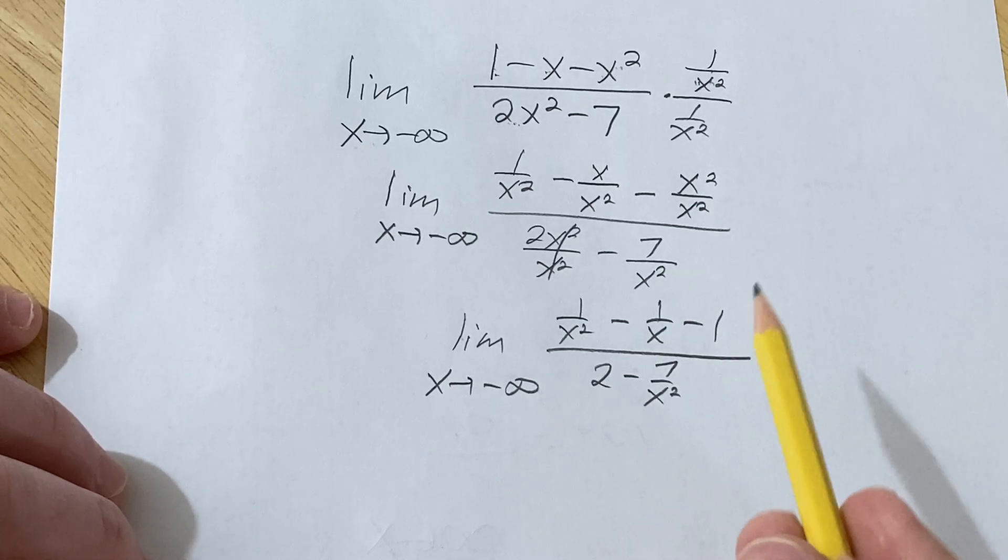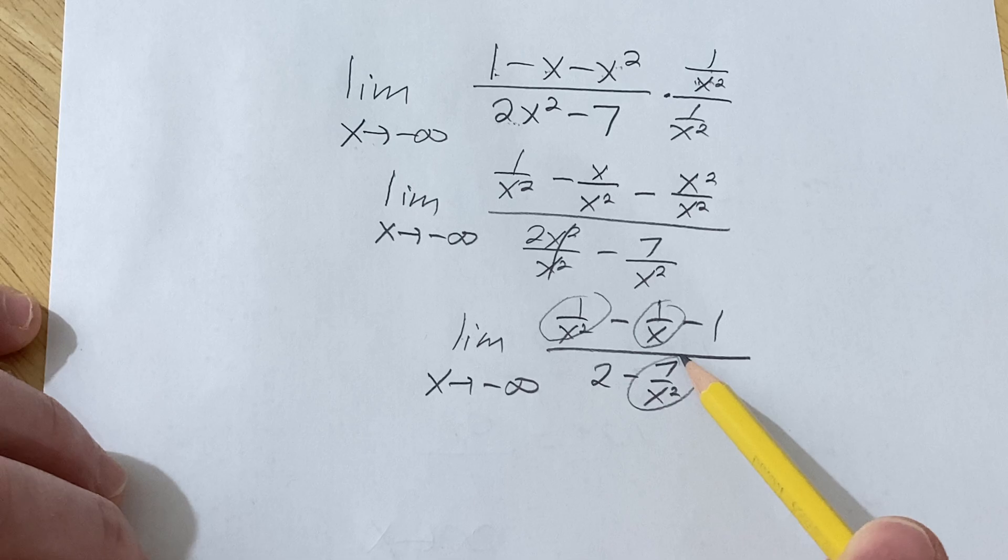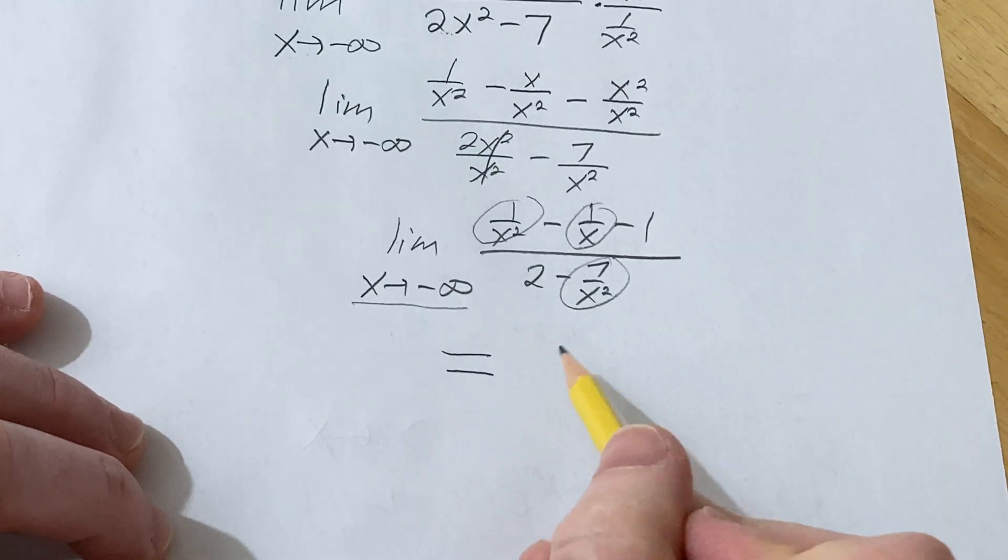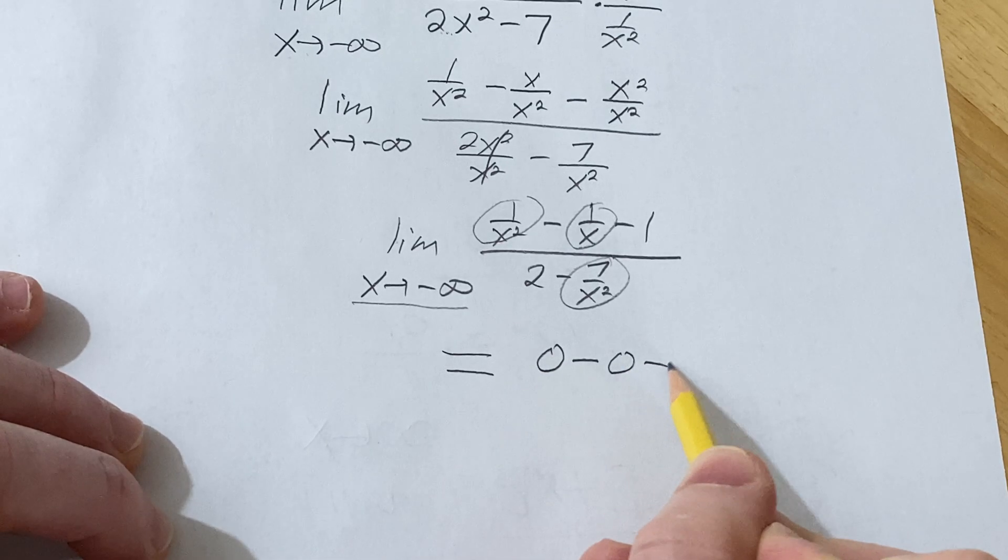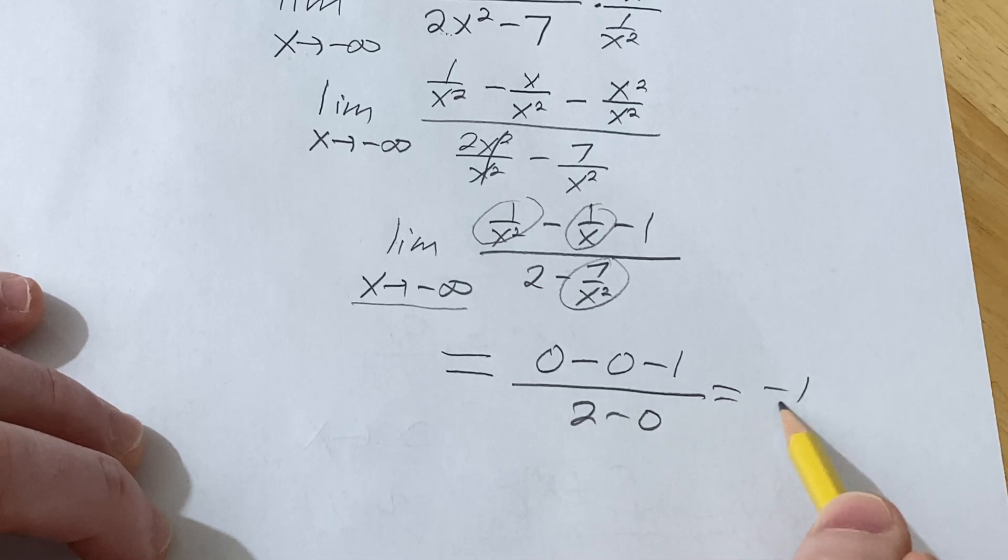Now it's a little bit more clear because you see that this approaches 0, this approaches 0, and this approaches 0 when x approaches negative infinity. So we can drop the limit sign and we get 0 minus 0 minus 1 over 2 minus 0. So we end up with negative 1 over 2.